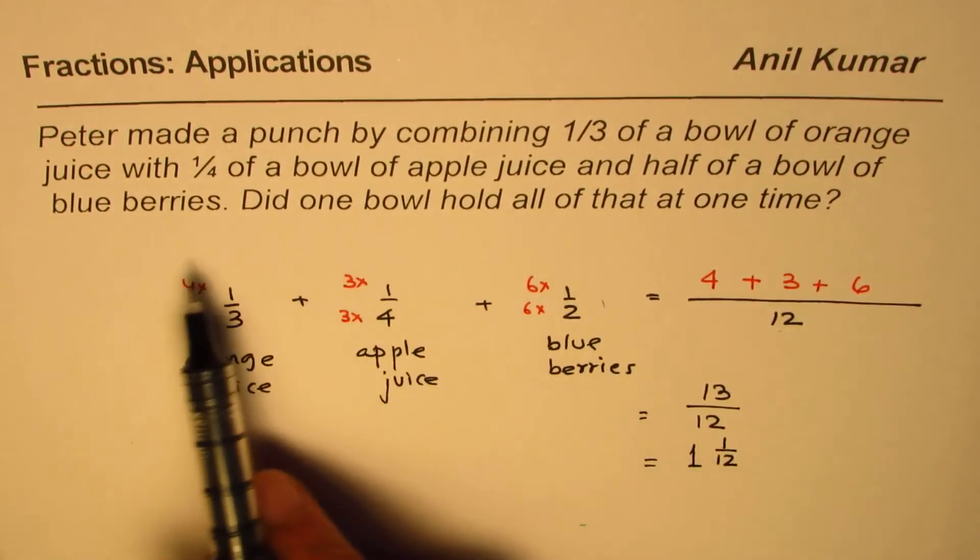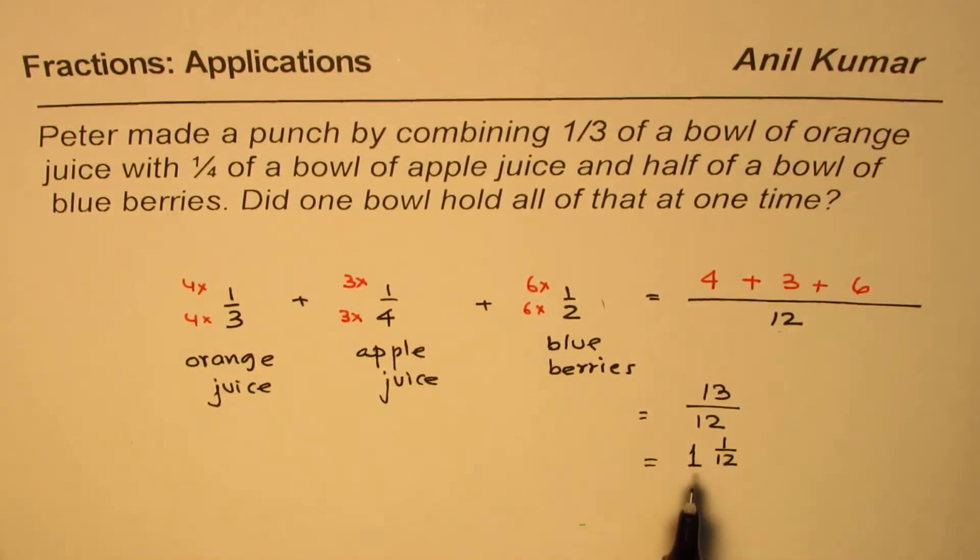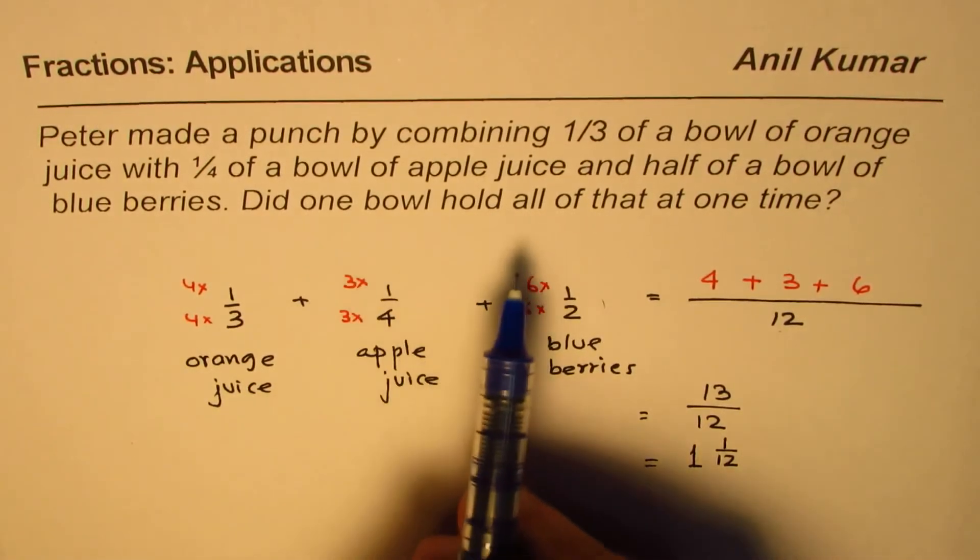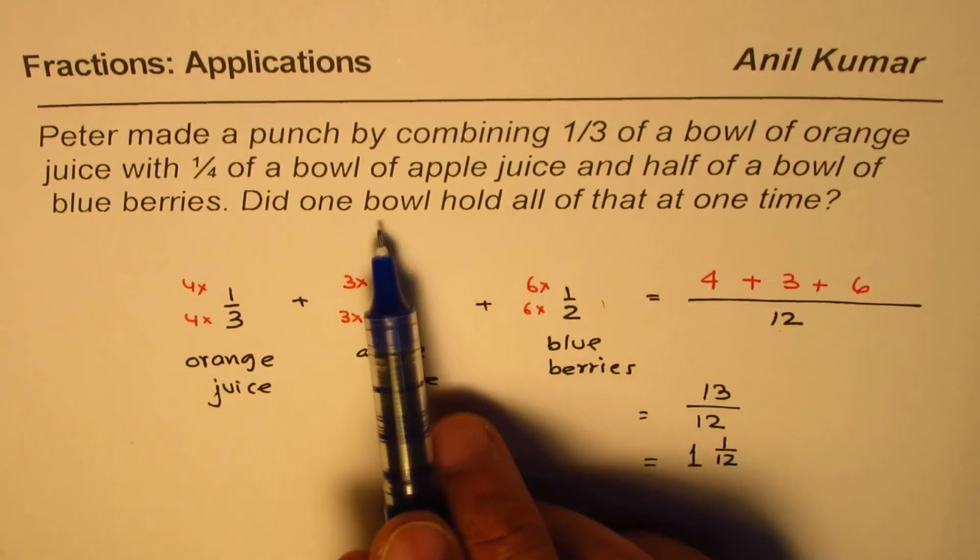If you divide 13 by 12, you get one whole and 1 over 12. Do you see that? So therefore, all this combined together is slightly more than one. And therefore, it cannot be in one bowl.